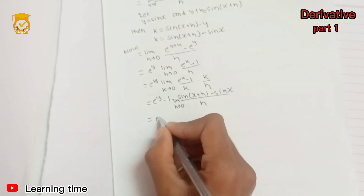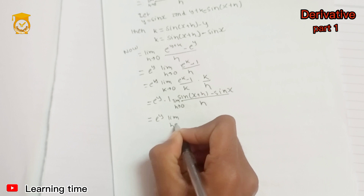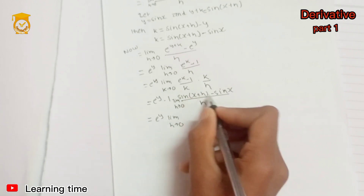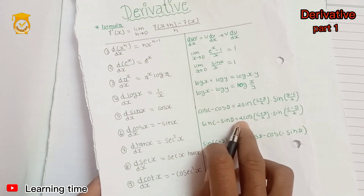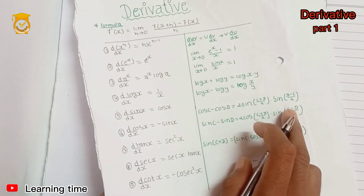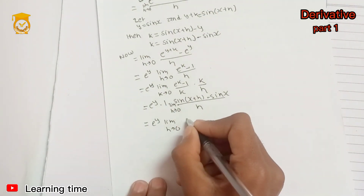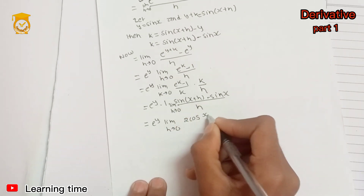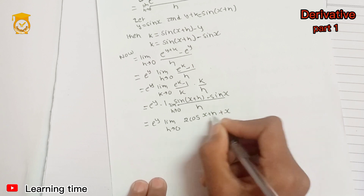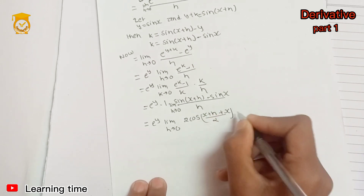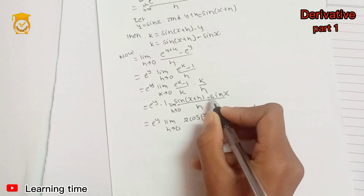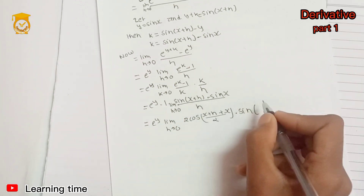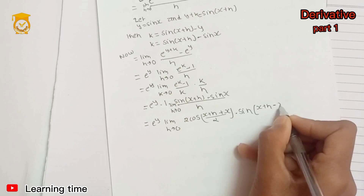Just like this, limit x to 0. Using sin C minus sin D formula: sin C minus sin D equals 2 cos((C plus D)/2) times sin((C minus D)/2).